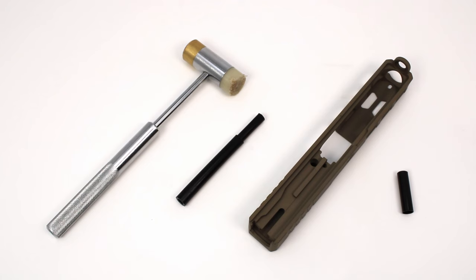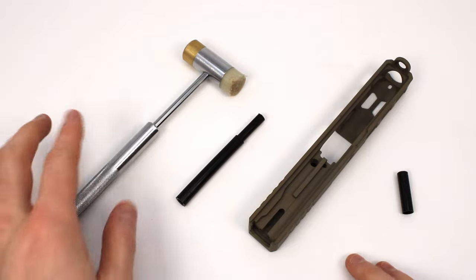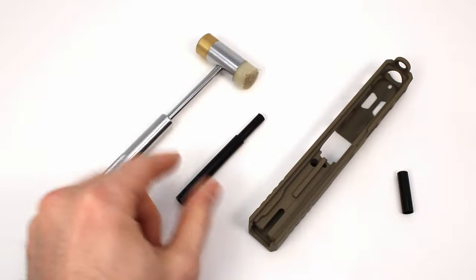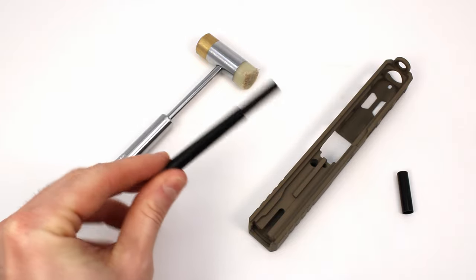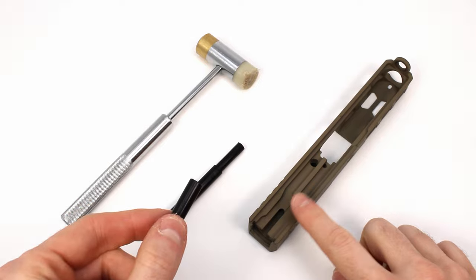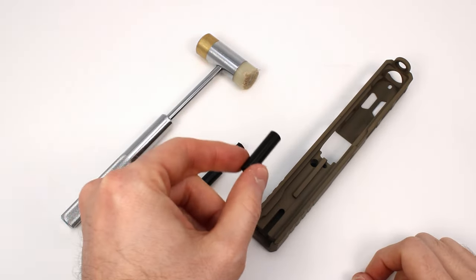So the only tools that you really need for this install are a gunsmithing hammer. I recommend one with a polymer head. And you're also going to need something called a channel liner install tool.